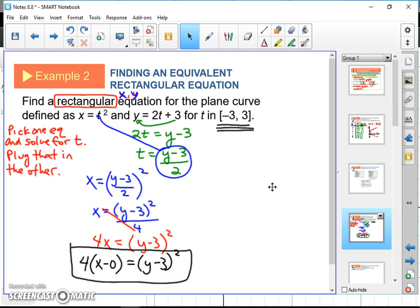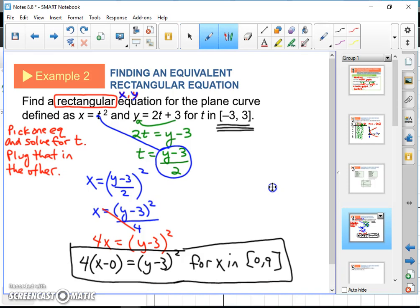So we want to pay attention to that. And really, we have to make a note of that in our answer and say for X in the interval from 0 to 9. If we don't say that, if we don't add that extra little interval on there, then there's nothing that stops this sideways parabola from continuing on indefinitely forever. We have a parabola that stops at 9.